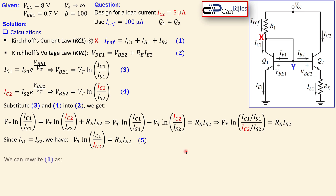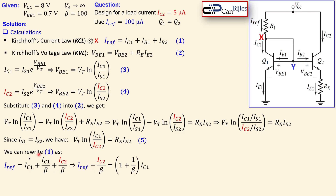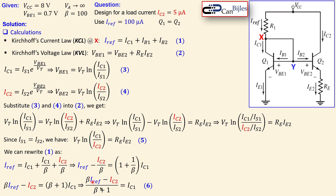Rewriting equation 1: IRF = IC1 + IB1 + IB2 = IC1 + IC1/β + IC2/β. Collecting terms and rearranging, then multiplying both sides by β to eliminate IC1, we get an expression relating IC2 to IRF. Dividing by (β + 1), we obtain IC1 in terms of IRF, IC2, and β. This is equation 6, which can now be substituted into equation 5.